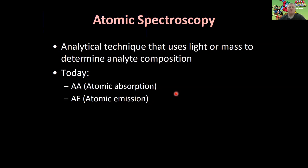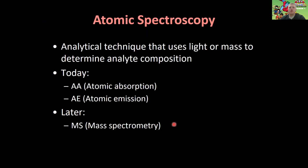More specifically, atomic spectroscopy is an analytical technique that uses light or a mass to determine the analyte composition. We are only dealing with techniques that use light today — we're not going to be dealing with mass spectrometry. That's the technique that uses mass, and we'll get into that at the very end of the semester.